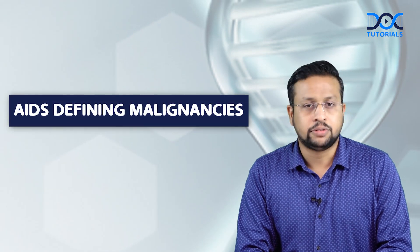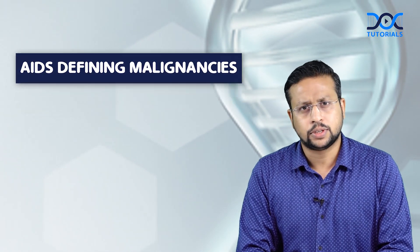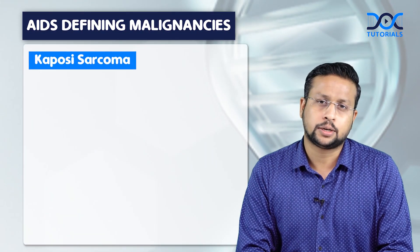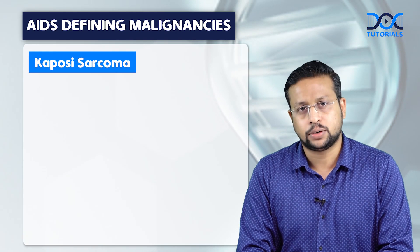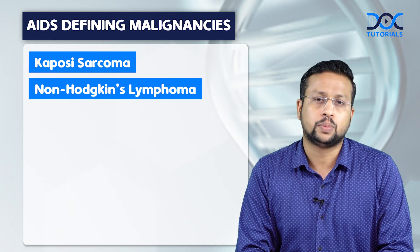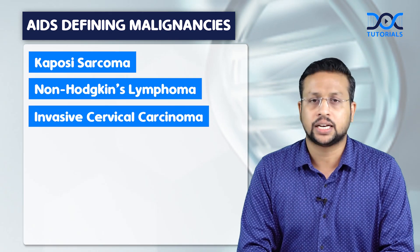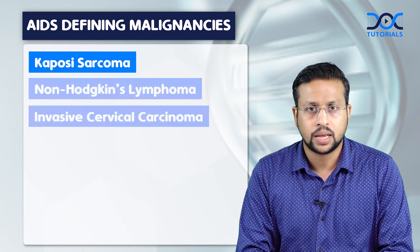There are three AIDS-defining malignancies. The first one is Kaposi's sarcoma, the second one is non-Hodgkin's lymphoma, and the third one is invasive cervical carcinoma.